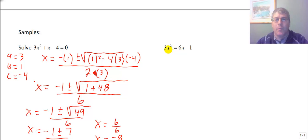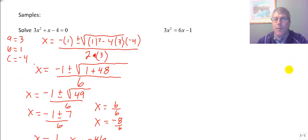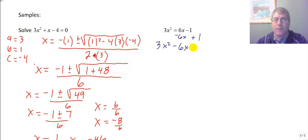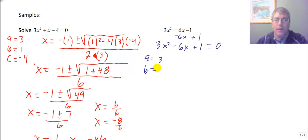Let's take a look at our second sample problem: 3x squared equals 6x minus 1. This one we'll need to put in standard form. We subtract 6x and add 1 to both sides, getting 3x squared minus 6x plus 1 equals 0. Now I can figure out what a, b, and c are. In this problem, a equals 3, b equals negative 6, and c equals positive 1.